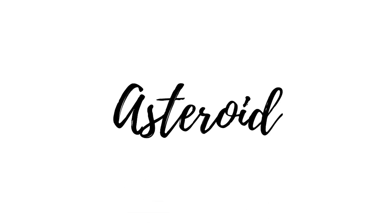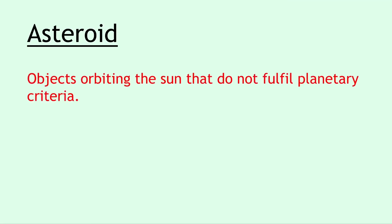Next, we have a moon, and a moon is defined as a natural object that orbits a planet. The next definition is an asteroid, and asteroids are objects orbiting the sun that do not fulfill planetary criteria.